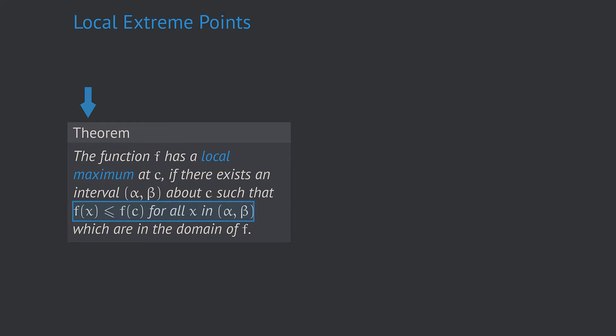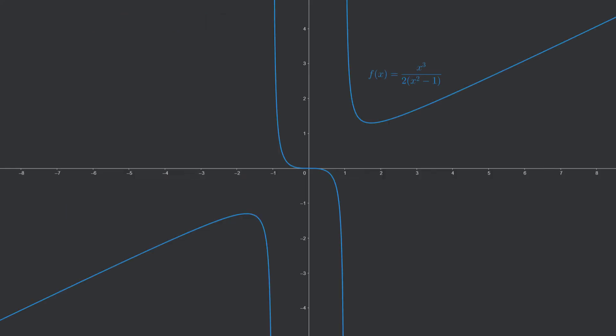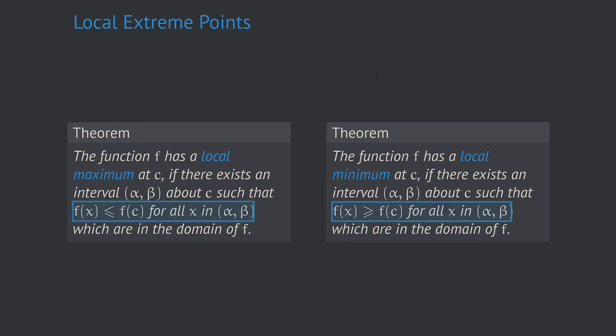In simpler words, c is a local maximum if its function value is locally maximal — there is no greater function value in the neighborhood of c. Similarly, f has a local minimum at c if f(x) ≥ f(c) for all x in some interval about c. In some greater distance from the local maximum, however, there may be function values which are greater than the function value of the local maximum. For our function, a local maximum is somewhere around here and a local minimum is somewhere around here.